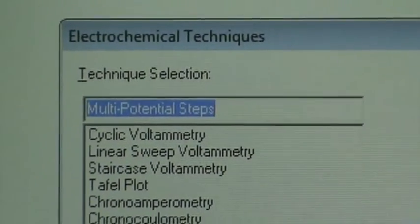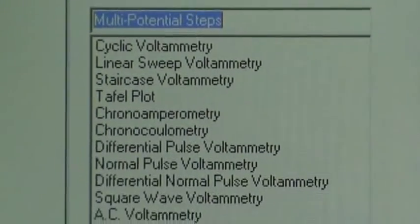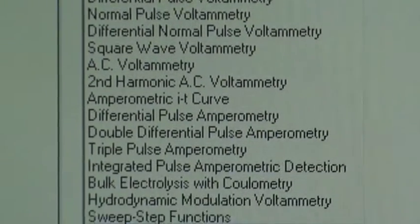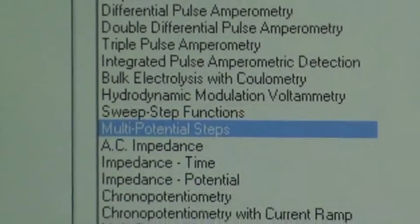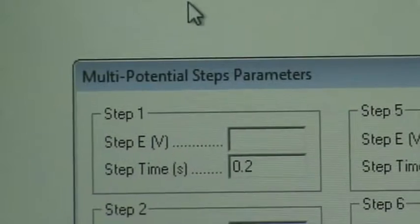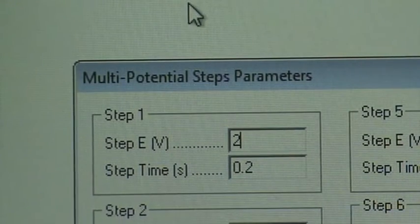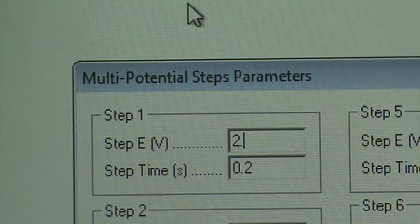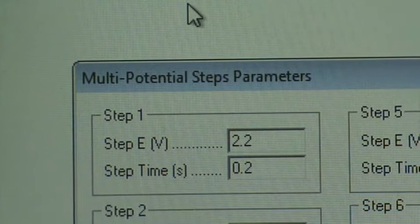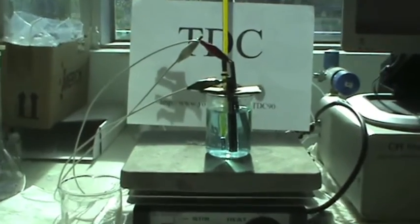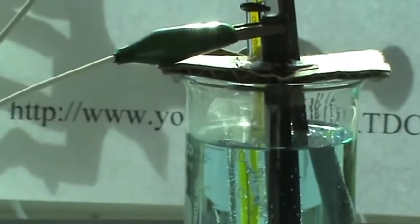To start the experiment, we need to select the correct electrochemical technique on the computer program, which is the multi-potential steps technique. In this technique, we can hold a particular potential for a period of time. For our case, a potential of 2.2 volts and 10,000 seconds, which is about 2.8 hours, is selected. Once the parameters are all set, press OK.